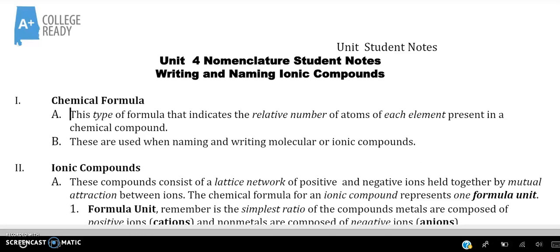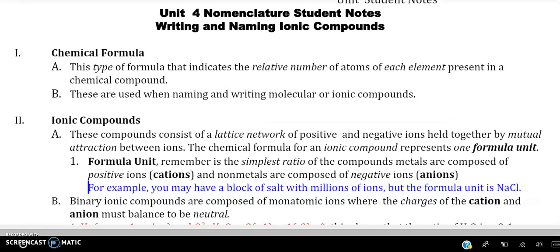This is Jennifer Dassinger with A Plus College Ready, and today we'll be going over Unit 4 Nomenclature, Writing and Naming Ionic Compounds. A chemical formula indicates the relative number of atoms of each element in a compound. These formulas can either be molecular or ionic.